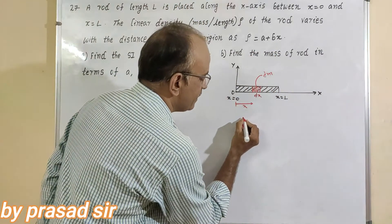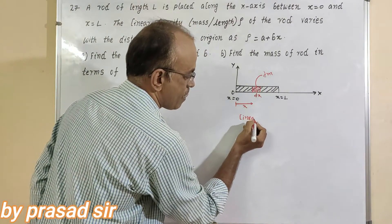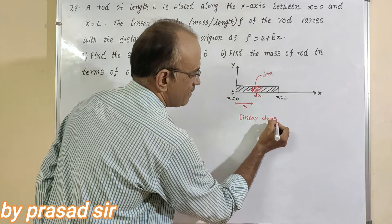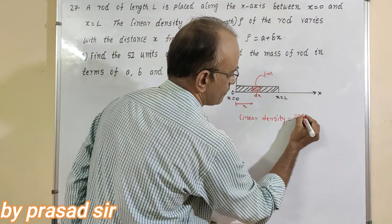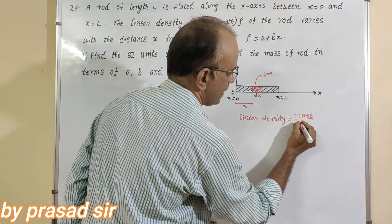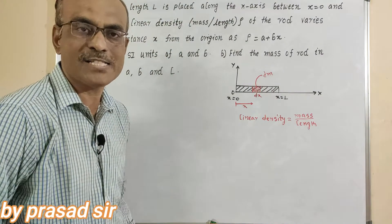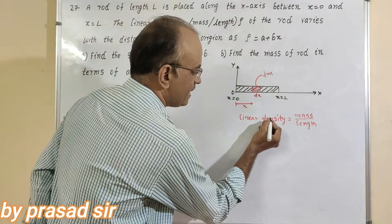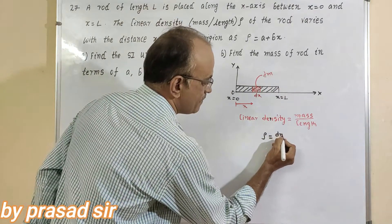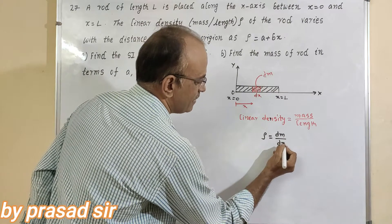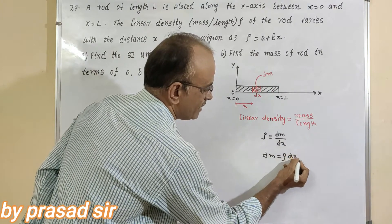But here what is given? Linear density. That is linear density equals mass by length. Now what happens here? Linear density can be represented as rho equals mass, which is dm, divided by length, which is dx. So here dm equals rho into dx.